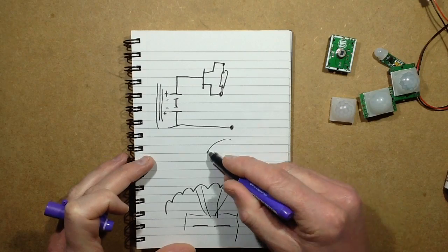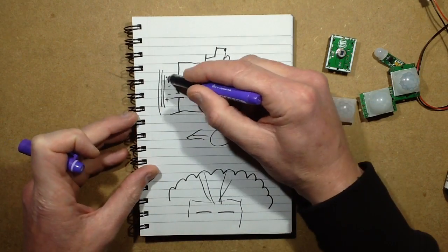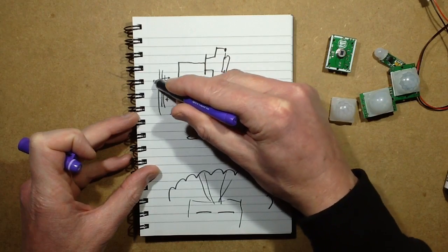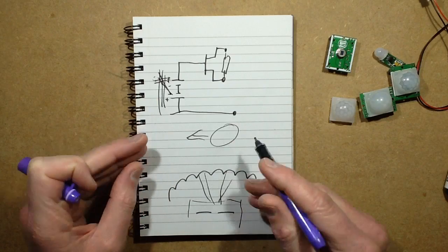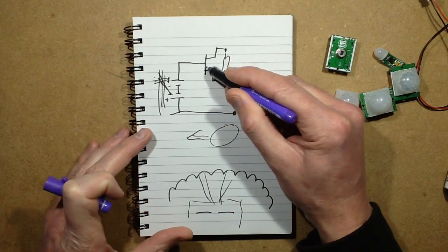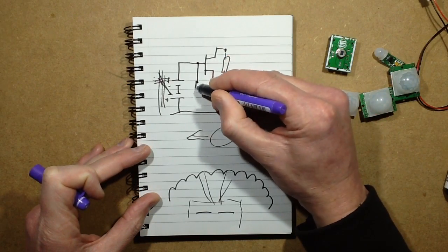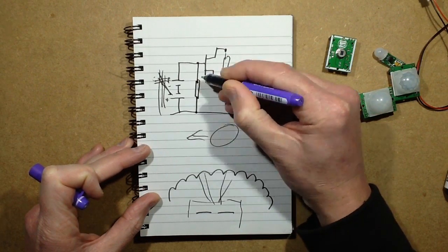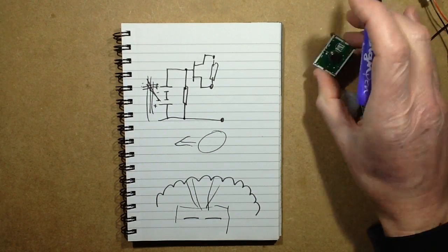However, when a hot object walks in front of these lenses, you'll actually get focused points of energy passing across these, and that will cause a significant deflection which is detectable by the field effect transistor and causes a change of resistance. There's also another very high value resistor built into these packages just to keep it stable.